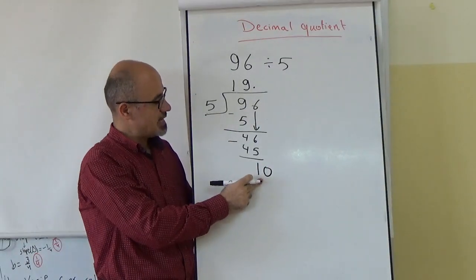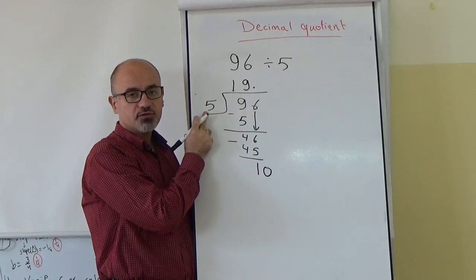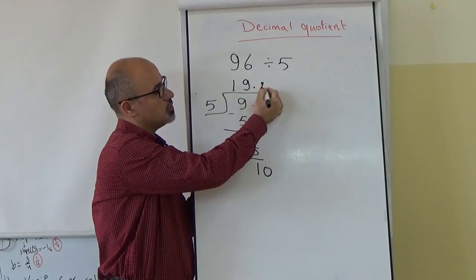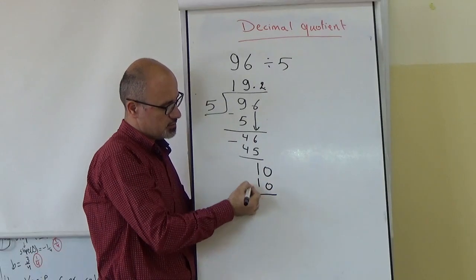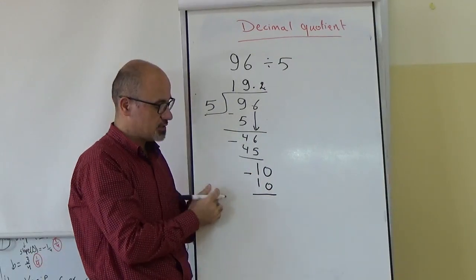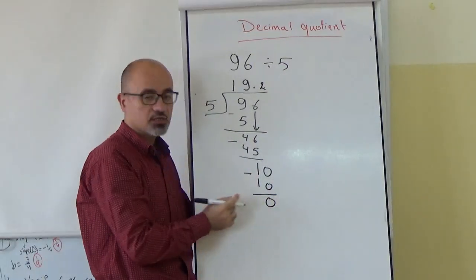So, it is 10 divided by 5, it is 2. 2 times 5, it is 10. Now, can we subtract? Yes. What is the final remainder? 0.